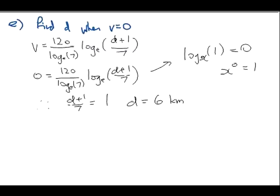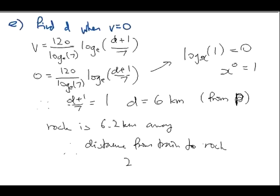6.2 kilometers from P. Right? D is 6 kilometers. Remember that D is the distance from the point, from point P, which is where you got out of the tunnel. So, you just go, okay, rock is 6.2 kilometers away. Therefore, distance from train to rock is 6.2 minus 6 equals 0.2 kilometers. Or, 200 meters. There you go. Question 2 out of the way.